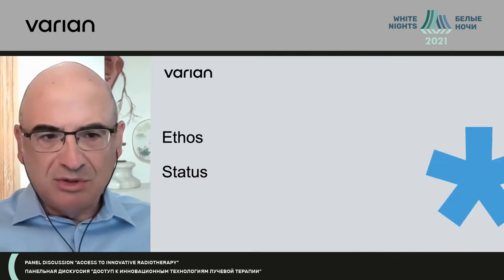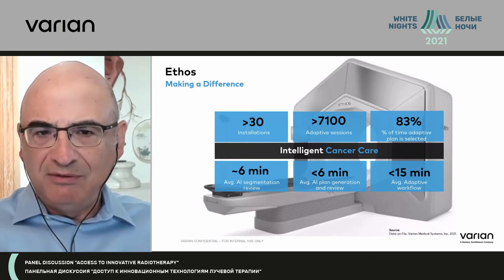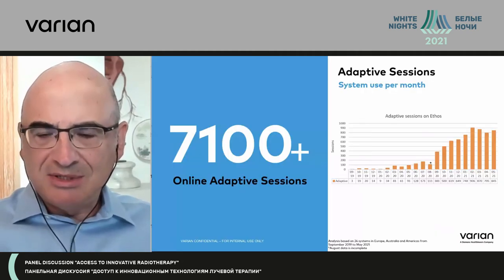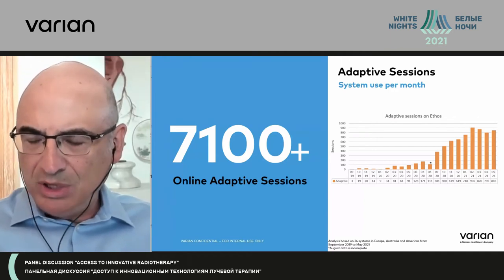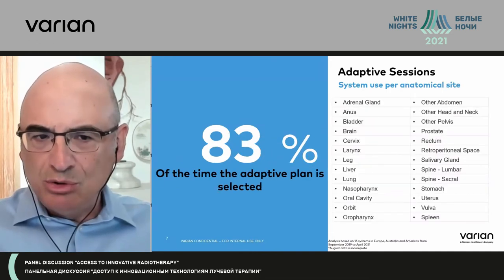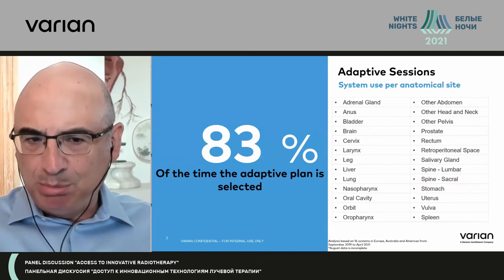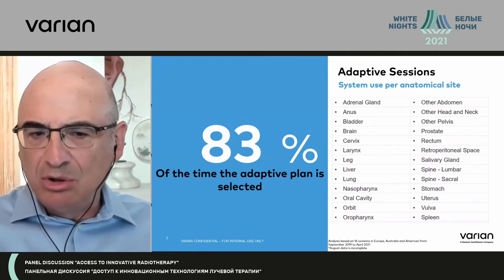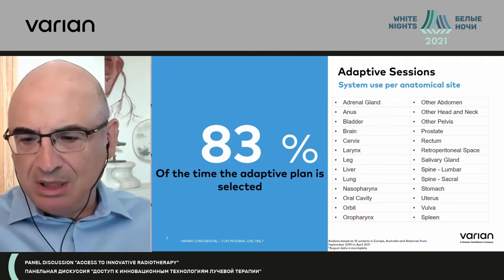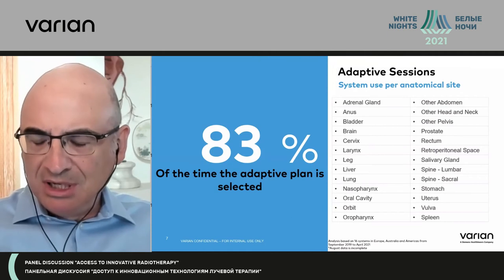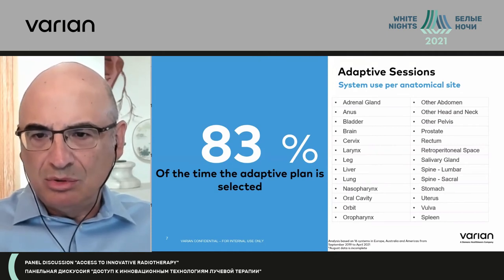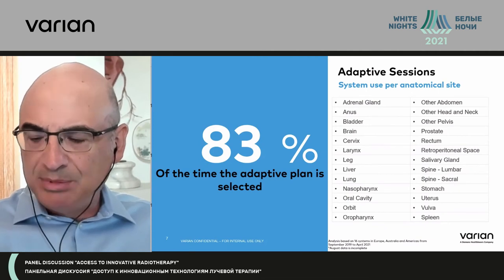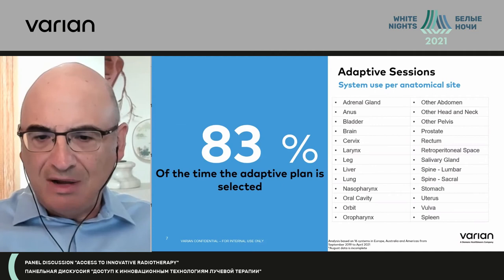So what's the status of Ethos today? There are a number of installations and a number of adaptive sessions that have been done. In over 7,000 adaptive sessions that we can monitor, 83% of the time users have selected the adaptive plan and not the scheduled plan — i.e., there was enough of a clinical difference that users said they would go with the new optimized, re-optimized plan. This indicates the process is actually helping users do this efficiently. On the right side you can see a number of anatomic disease sites where adaptive has been utilized. Currently, a lot of the use is in the pelvis.